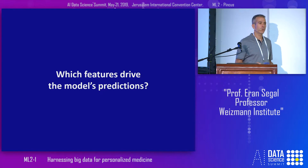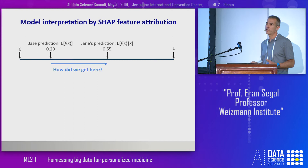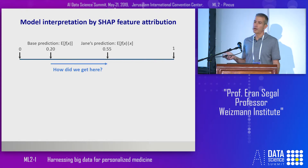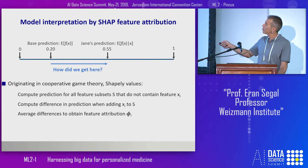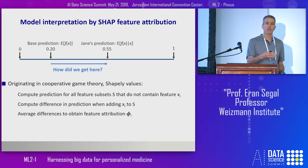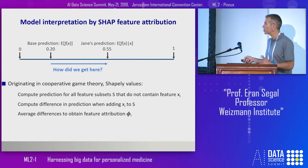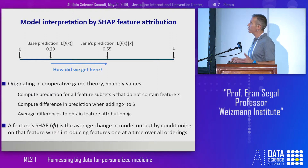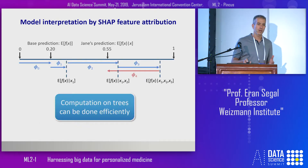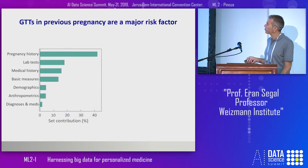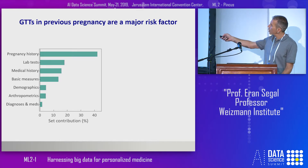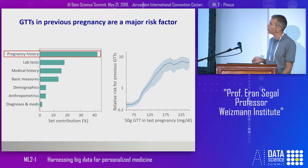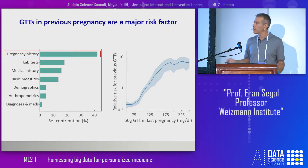We next wanted to understand which features are actually driving the model predictions. We used a feature attribution framework called SHAP, which originated in game theory. The basic idea is that it evaluates the contribution to the prediction of each feature when considering adding it to the model from all possible subsets of all other features and in all possible orderings. For trees, this computation can be done very efficiently. Using this analysis, we looked at different categories of the 2,000 features and found that features from previous pregnancy history are at the top — in particular, the value of the glucose tolerance test in the previous pregnancy provides a very high increase in relative risk.